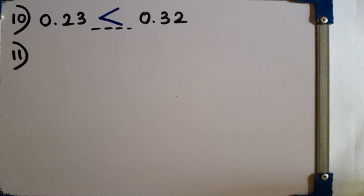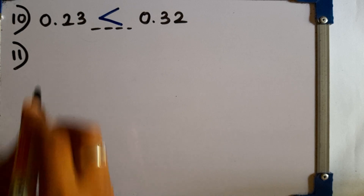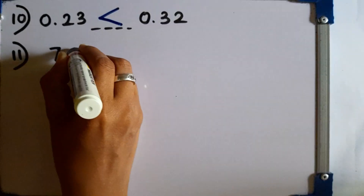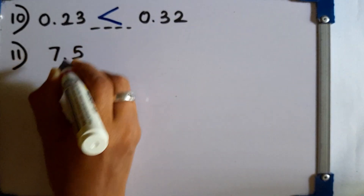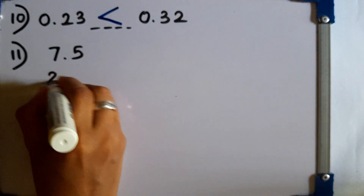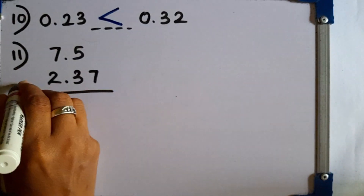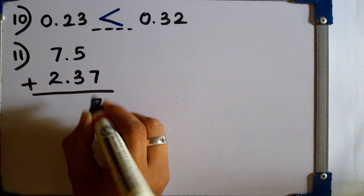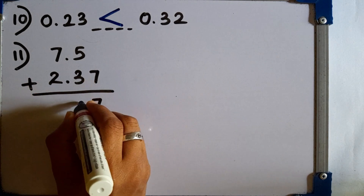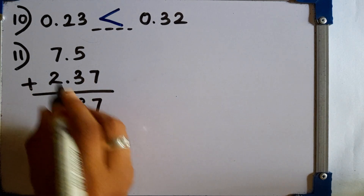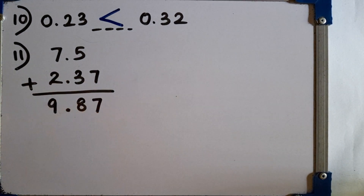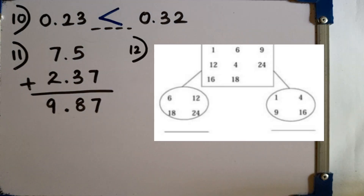Question number 11: add 7.5 and 2.37. We have to write the decimal numbers so the decimal point comes one below the other, and the first decimal places align. Adding: 5 plus 3 is 8. Put the decimal point, then 9. The answer is 9.87.